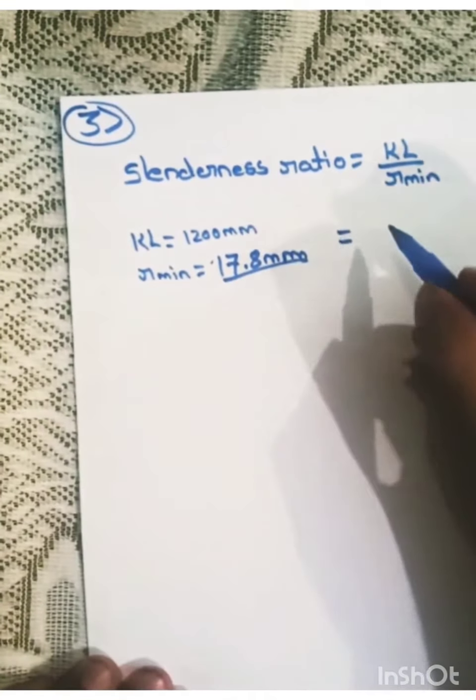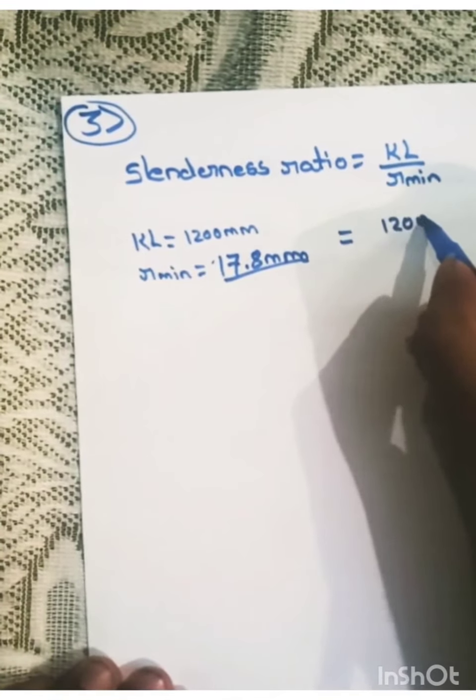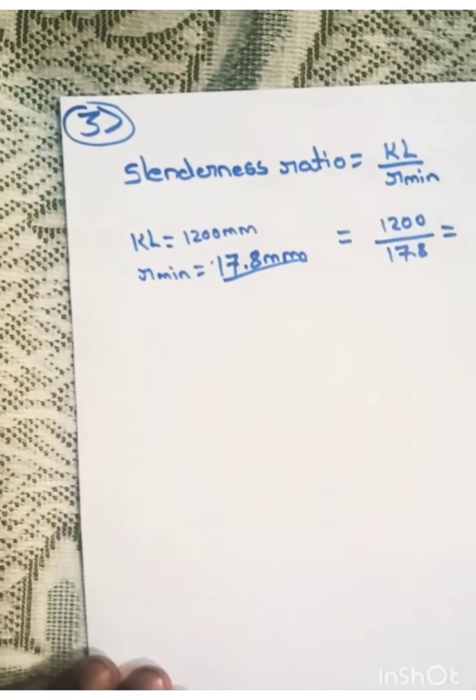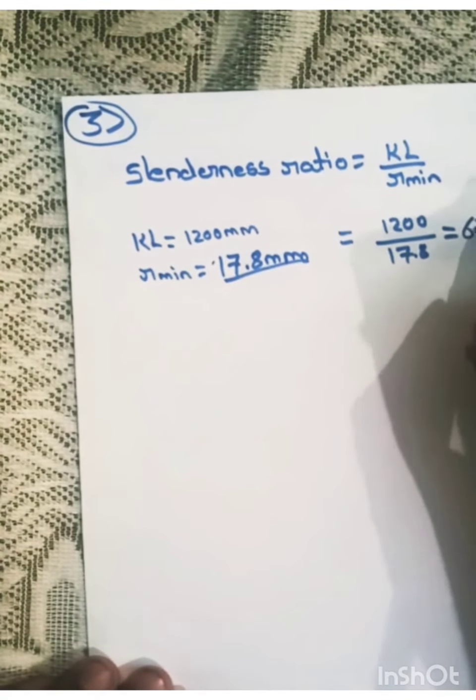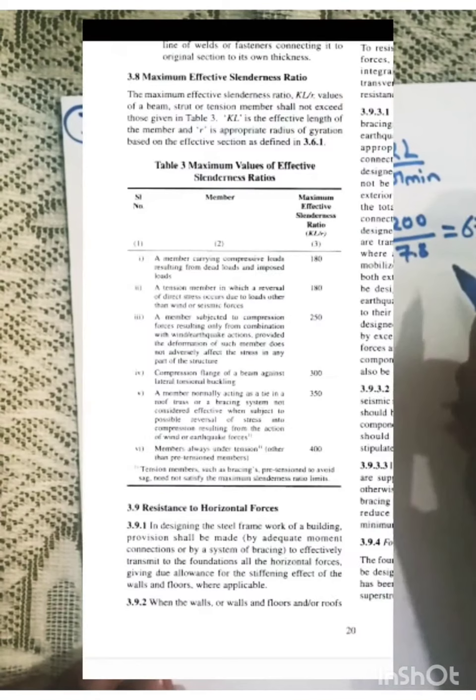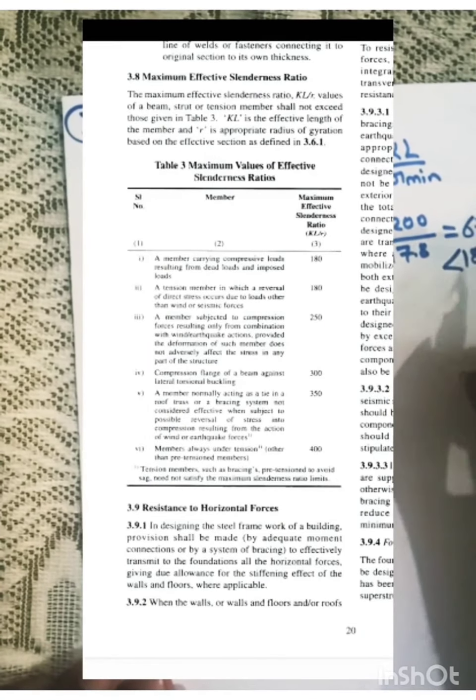So therefore, slenderness ratio will be 1200 by 17.8 which comes around 67.4